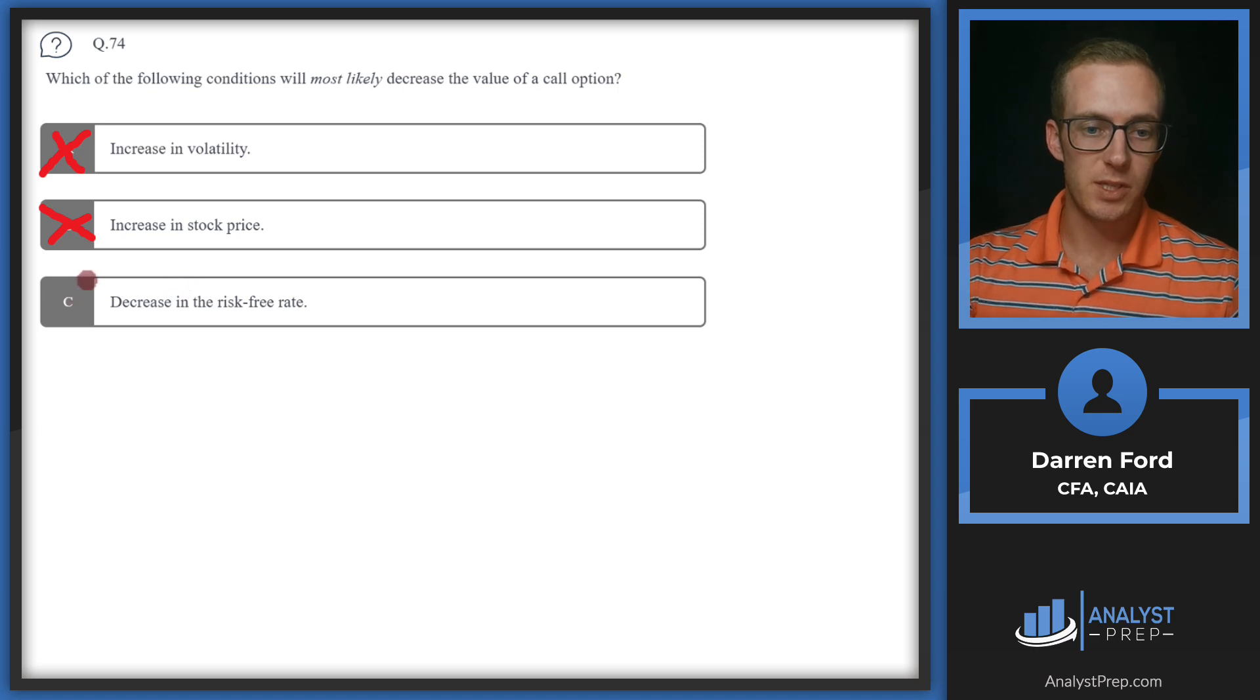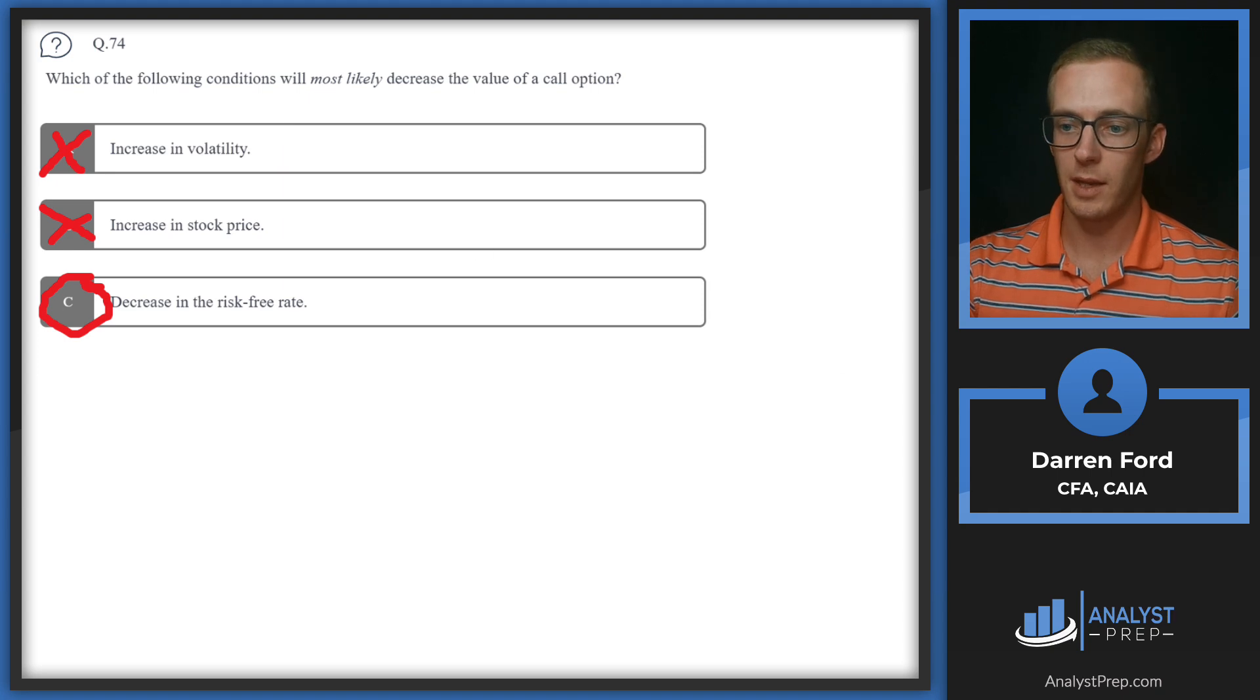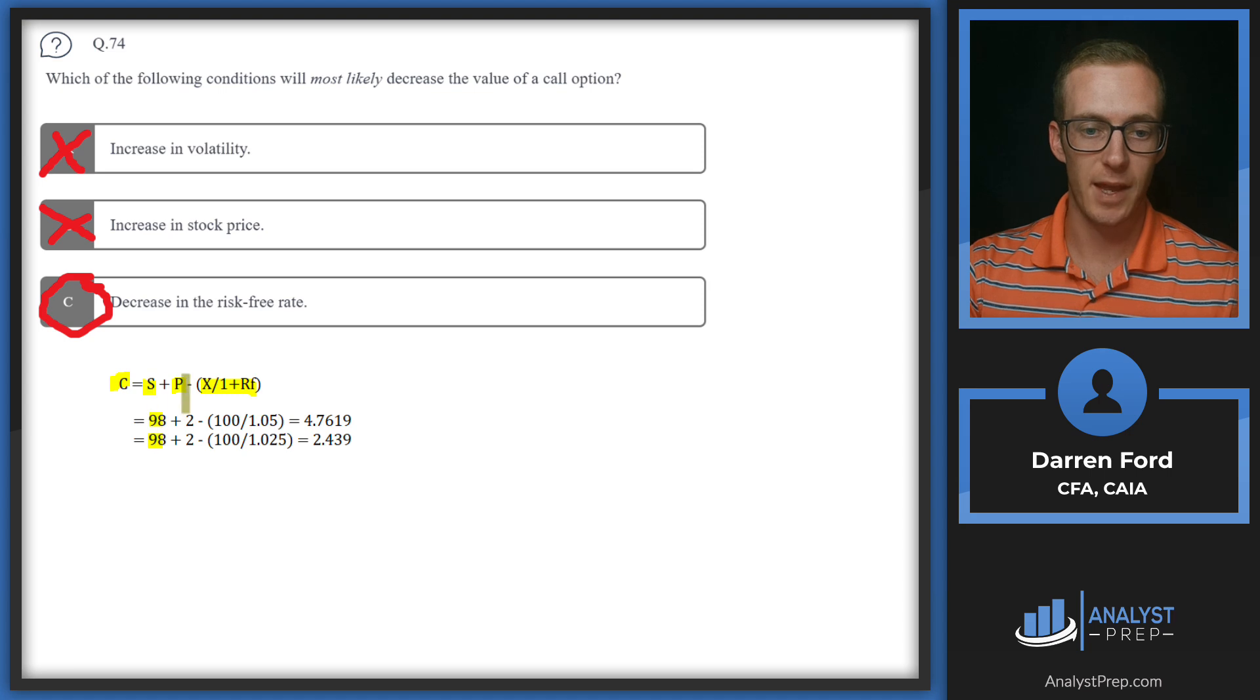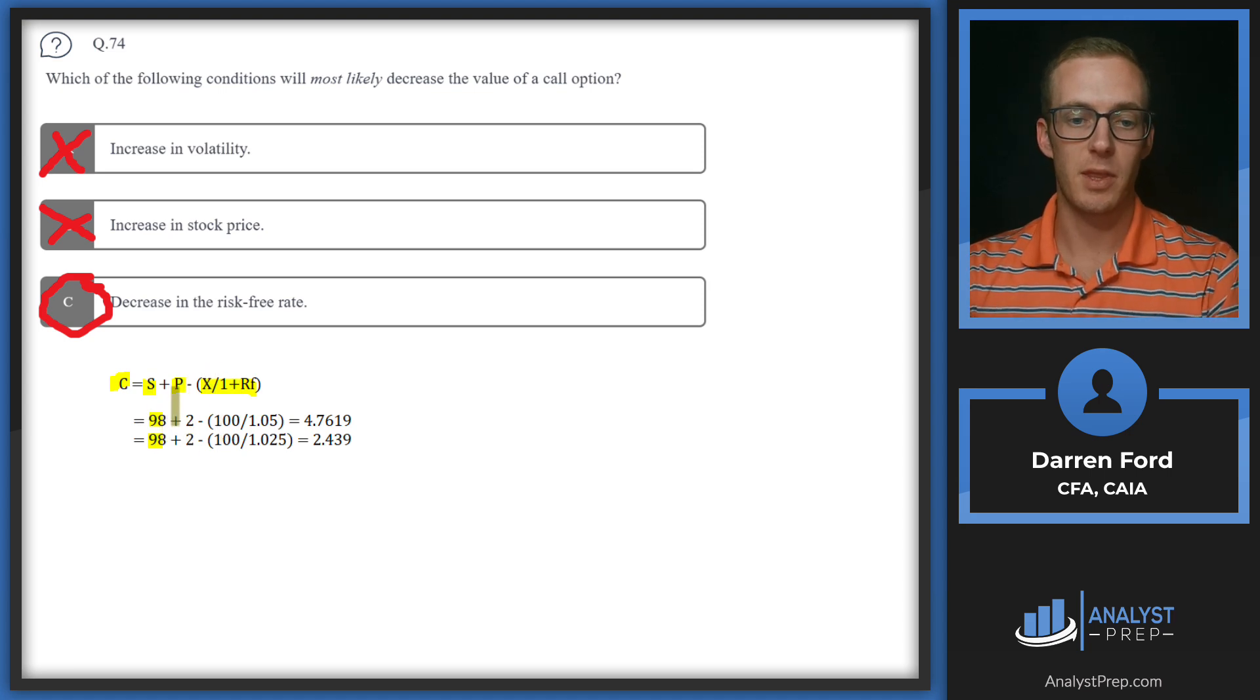That leaves us with C: Decrease in the risk-free rate, which will be correct. I want to pull in an example here that's pretty simplified. This is the put-call parity formula. I've got the value of the call option on the left, and we've got our underlying plus the put minus our risk-free bond. I'm using the same three numbers here for the S, P, and strike price variables.